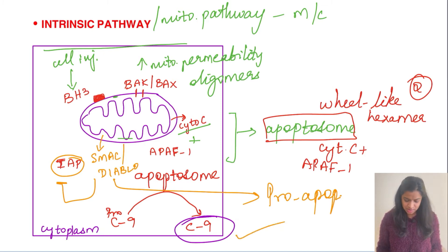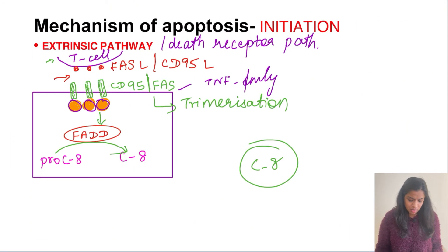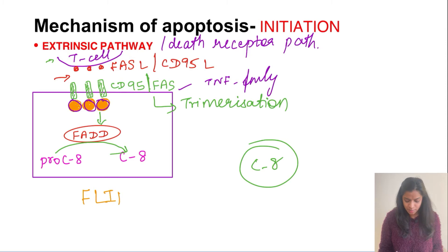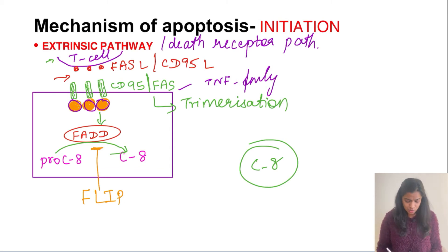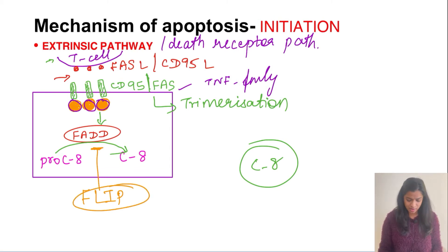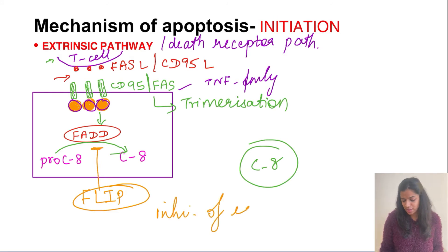One thing to mention about the extrinsic pathway: there is a protein called FLIP which inhibits the conversion of pro-caspase 8 into active caspase 8. So FLIP is the inhibitor of the extrinsic pathway.